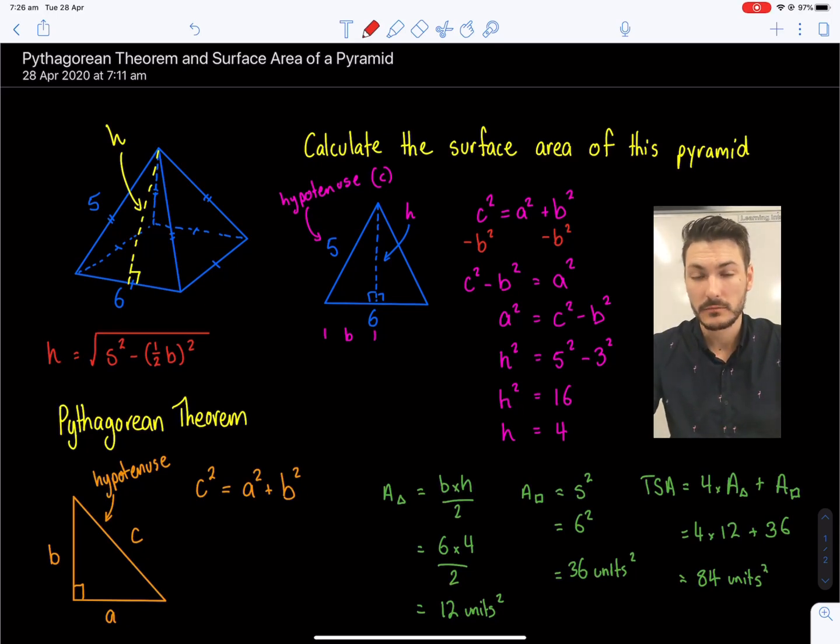Now, very frequently you're going to get answers that are not really nice, like four. I got four for mine because I constructed this so that I would get a nice answer. Often you're going to get something like 3.89275 or something like that. In that case, just take it to two decimal places and make sure you note that your answer is going to be approximate. I hope this helps. If you have any more questions specifically, feel free to write them in the comments below or send me an email if you're one of my students. I hope it helped and good luck calculating the surface area of pyramids.